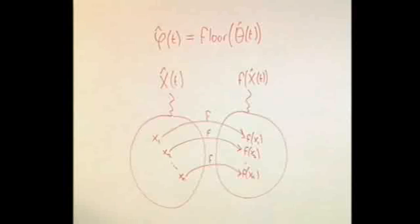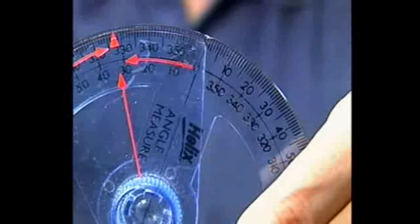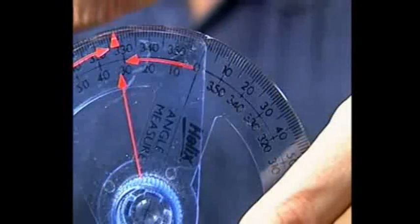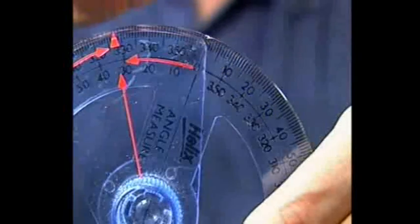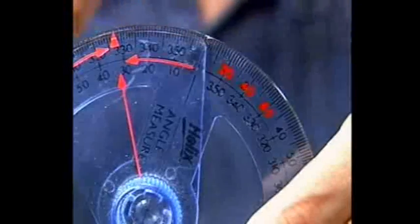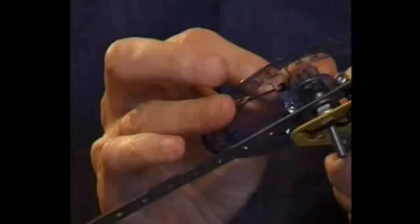Another way of measuring the observable f of x would be to relabel the measuring instrument that's used to measure x. For example, if we took this protractor and relabeled it so that where it now says 10, 20, 30, and so on, we would write 20, 40, 60, and so on. Then the act of lining up that protractor with these rods and reading off the number on that scale would constitute measuring the observable 2 phi instead of phi.